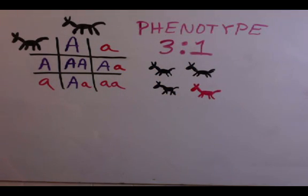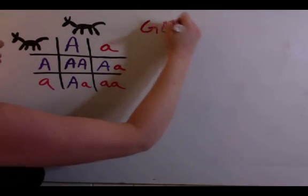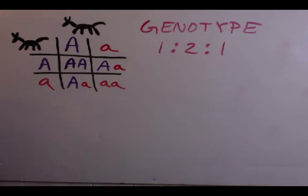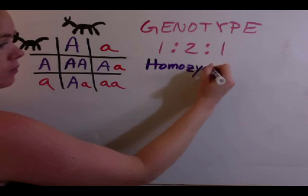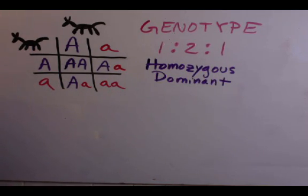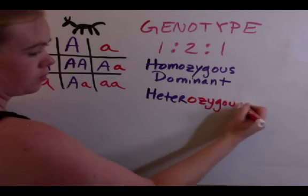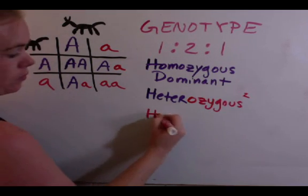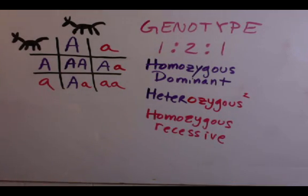But if we're looking at the genotype, then we have a one-to-two-to-one ratio, meaning that one of the offspring is going to be homozygous dominant big A, big A. Two of the offspring are going to be heterozygous big A, little a, and one of the offspring is going to be homozygous recessive little a, little a.